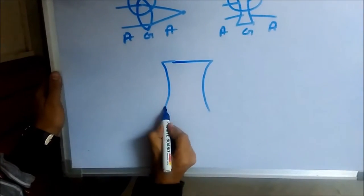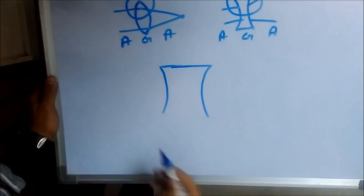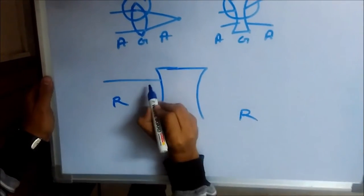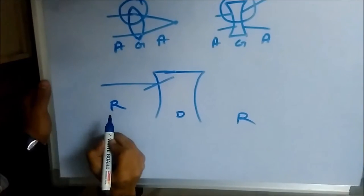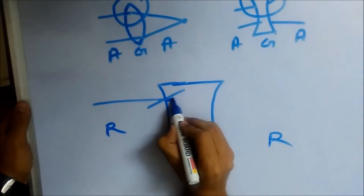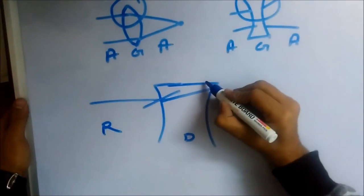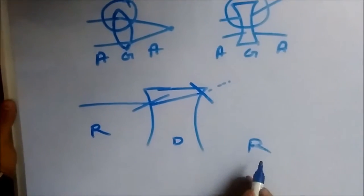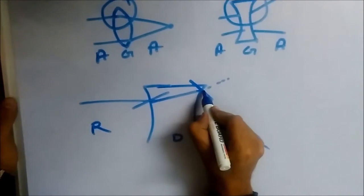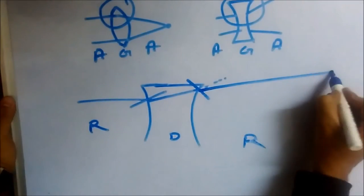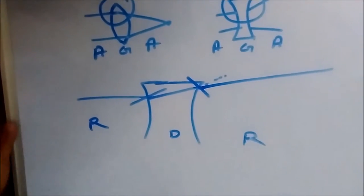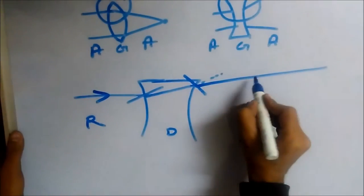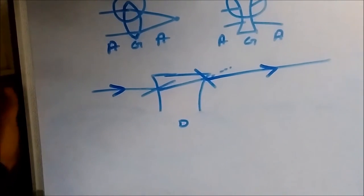Now taking a cross section of the inward-curved lens: again we have rarer, denser, then rarer medium. From rarer to denser, the ray bends towards the normal. This is the normal to the surface. From denser to rarer, it bends away from the normal. So the ray bends in the opposite direction at each surface, and as a whole the ray diverges away from the center line.